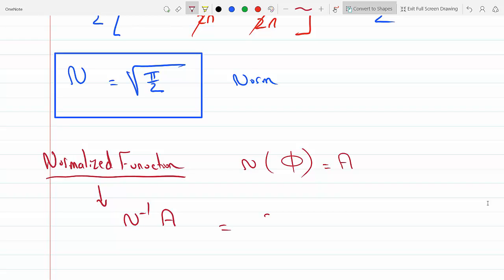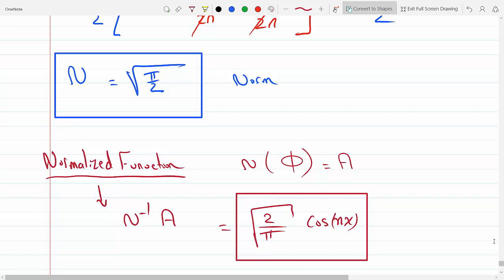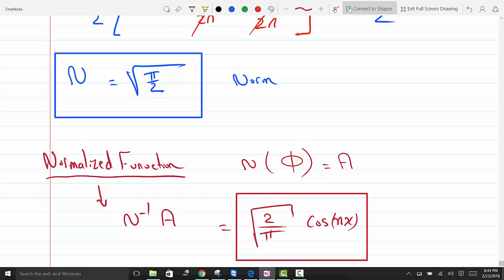And so this will be 2 over pi times the cosine function that we normalized. There you go, this is the normalized function.